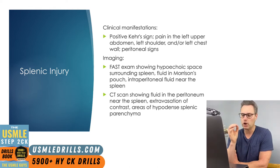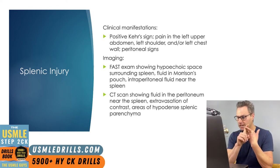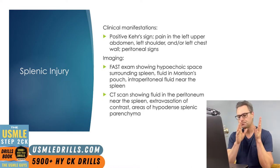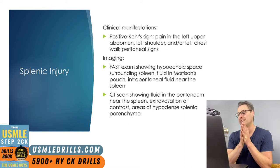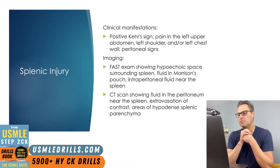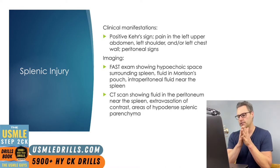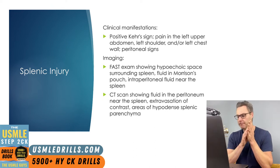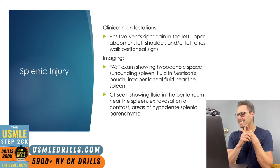Imaging consistent with splenic injury on a FAST exam includes subcapsular fluid in the spleen represented by a hypoechoic space surrounding the organ. Fluid can also be identified in the hepatorenal space, commonly referred to as Morrison's pouch, as well as free intraperitoneal fluid, typically located in close proximity to the spleen. On CT findings, it might show fluid in the peritoneum near the spleen, which is a sign of probable splenic bleeding, and extravasation of contrast from the spleen indicates an active, brisk bleed that requires surgical management.